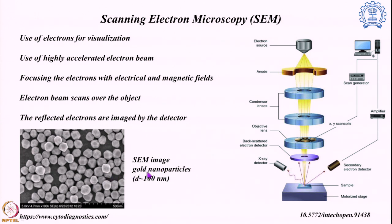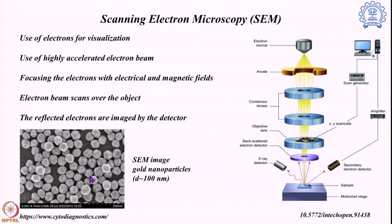I am showing you an SEM image of gold nanoparticles with 100 nanometer diameter — each of them is 100 nanometers in diameter. The scanning electron microscope gives a nice picture of the overall system, but the resolution is not as good as TEM. In TEM we can easily go below the nanometer level, whereas in SEM we can get to about 10 to 100 nanometers. That is the key difference between SEM and TEM.